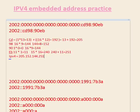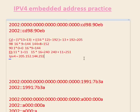Let's double-check: eleven times one equals eleven, and fifteen times sixteen equals two hundred forty. Two hundred forty plus eleven is two hundred fifty-one. There we go — we're all set.